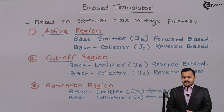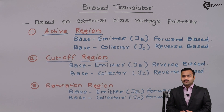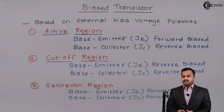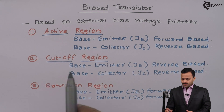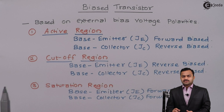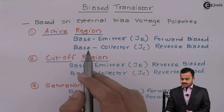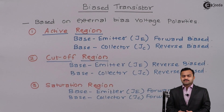Now we will see the working of a transistor in the active region. We are going to apply external voltage such that the base-emitter junction is forward biased and the base-collector junction is reverse biased.